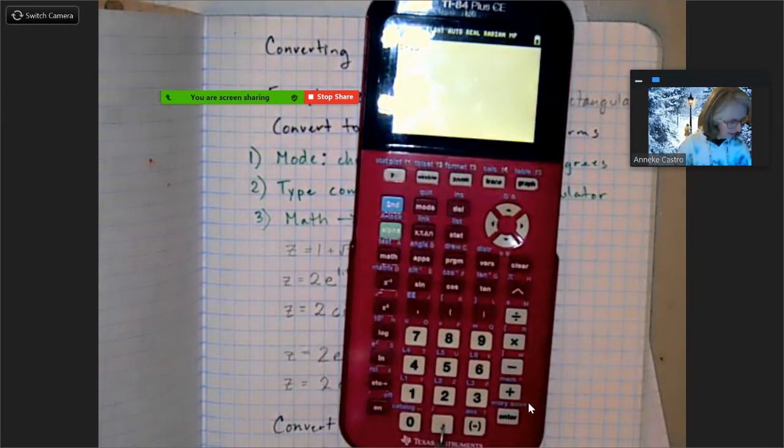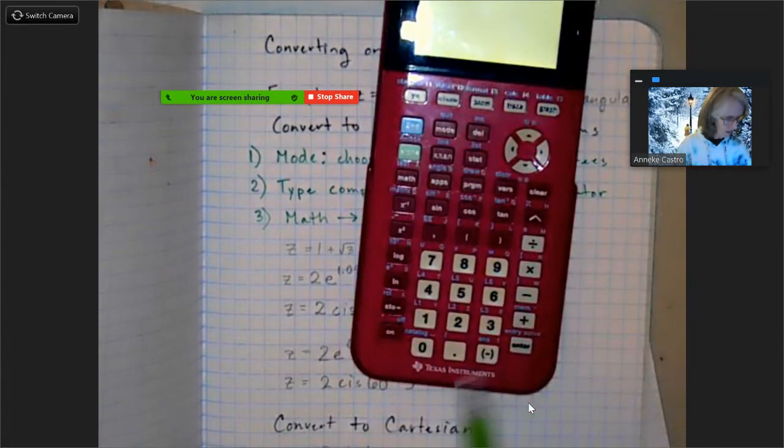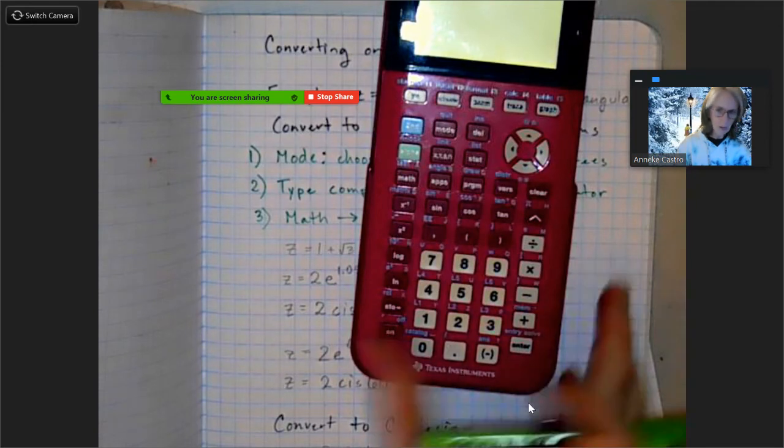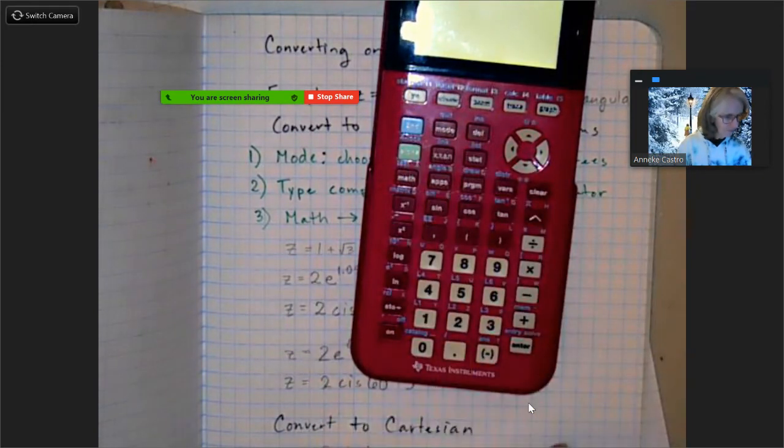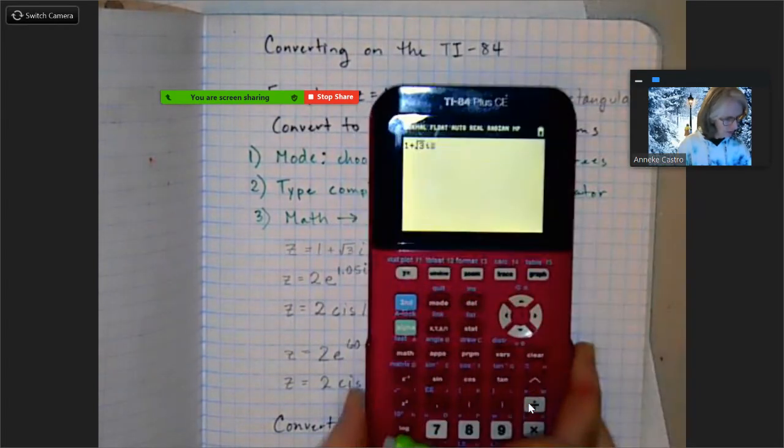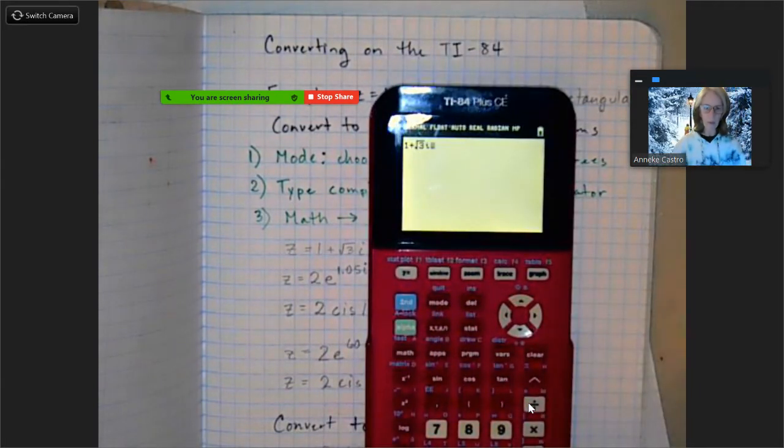So I'm going to use my little arrow to get out from under the square root, and i is right here, it's above the decimal point. So I'm going to do second decimal point and that's how I get my i. Second decimal point if you want to write that down.